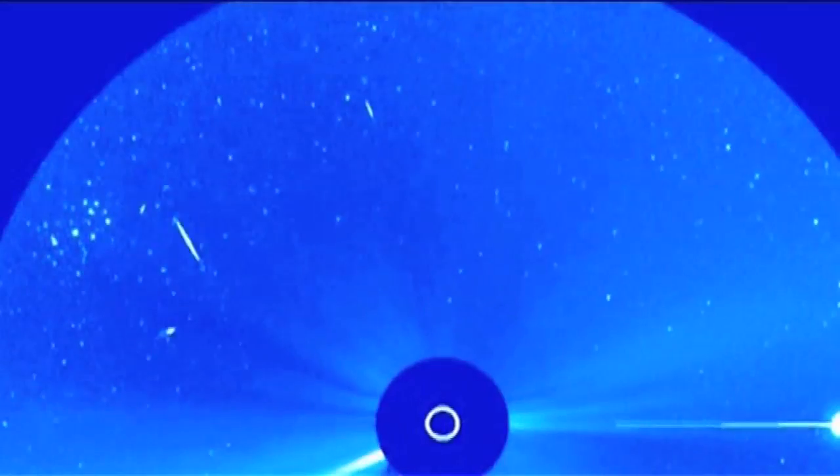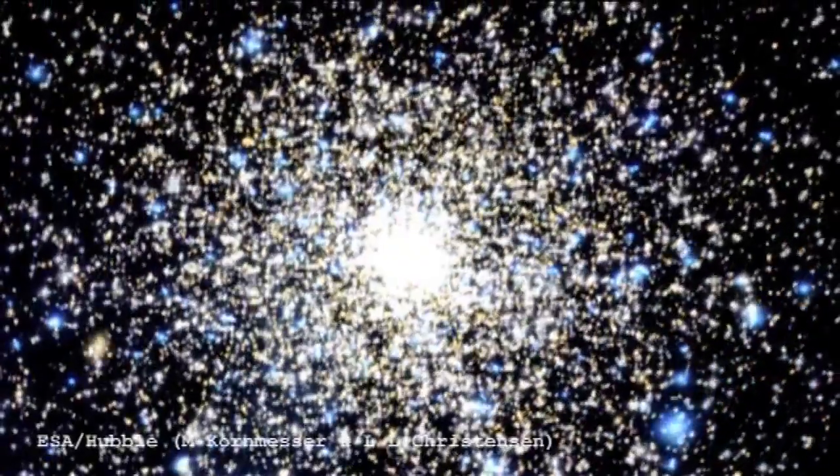The Pleiades is not only an open cluster, which means it's a group of stars, but it's what we call a reflection nebula. And so the Pleiades was formed something like a hundred million years ago. So it's relatively young in terms of the populations of clusters in the Milky Way.